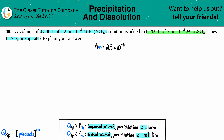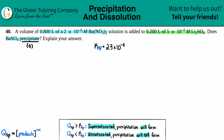The explanation comes down to precipitation, which means forming a solid. Precipitation only occurs when the Q value is greater than the equilibrium Ksp value. The Ksp of barium sulfate BaSO₄ is 2.3×10⁻⁸ — this is for saturated solutions. If you're supersaturated, a precipitate will definitely form.